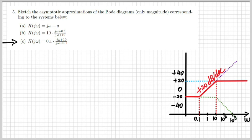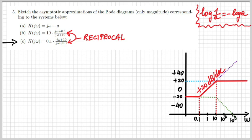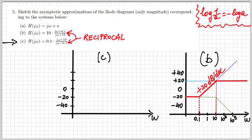For part C, the given H(jω) is exactly the reciprocal of the one from part B. Since we're operating in logarithmic scale, and log(1/A) = −log(A), the Bode diagram is simply the mirror image of part B — the same diagram with a negative sign. So if part B started at −20 dB then grew then leveled off, part C starts at +20 dB, then goes down by 20 dB per decade, then becomes constant.